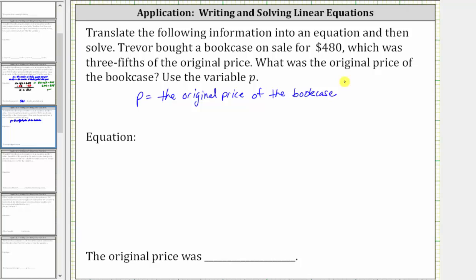And now from here, since the sale price was $480, which was three-fifths of the original price, three-fifths of p must equal 480. And three-fifths of p is equal to three-fifths times p, which gives us the equation three-fifths p equals 480.